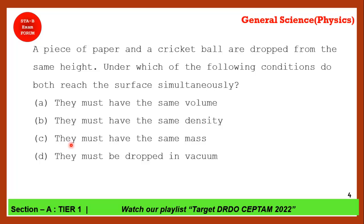A piece of paper and a cricket ball are dropped from the same height — under which condition do they reach the surface simultaneously? Remember that acceleration due to gravity is independent of the mass of the object. So both will reach the surface simultaneously, but only if they are dropped in a vacuum. Option D is the correct answer — the cricket ball does not come first.